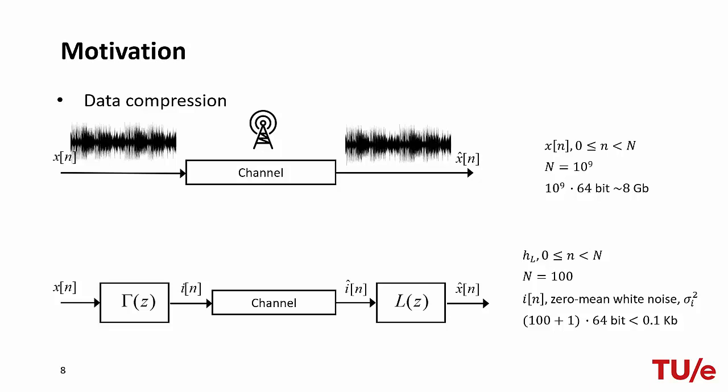If this filter requires, say, 100 coefficients, then we would only need 100 floating-point numbers for the filter and one floating-point number for the value of the input-noise variance, and we would be able to replicate the original signal. This reduces transmission from 8 gigabits to less than 1 kilobit.